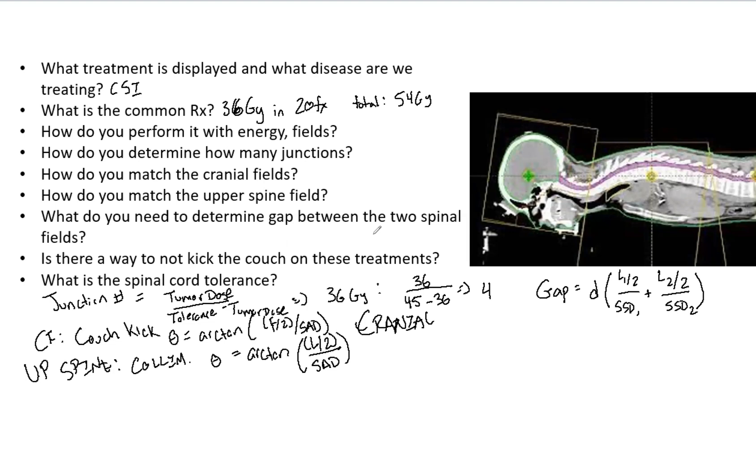Remember, to match that cranial field and the spine field, you have to kick the couch and kick the collimator. But if you use a half beam block, you can eliminate this couch kick and only change the collimator. Either way, you are kicking the collimator, but you don't have to kick the couch.